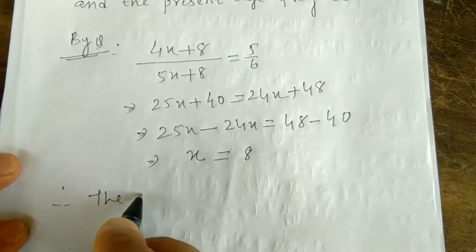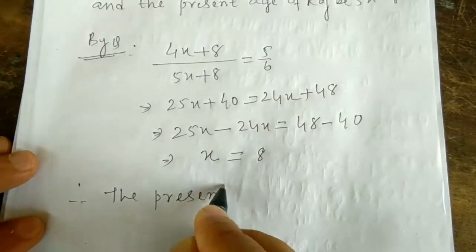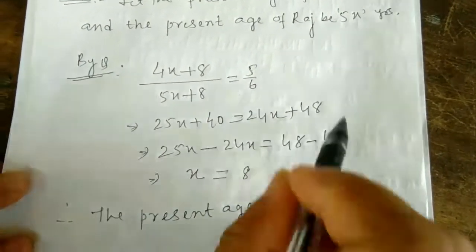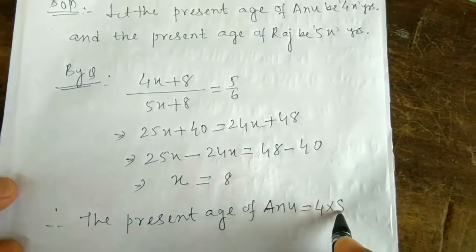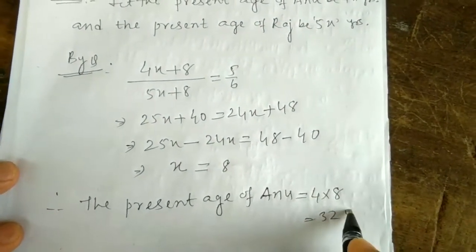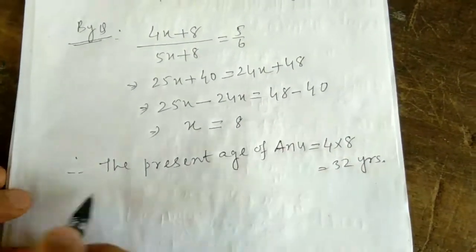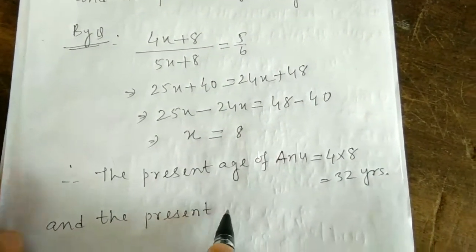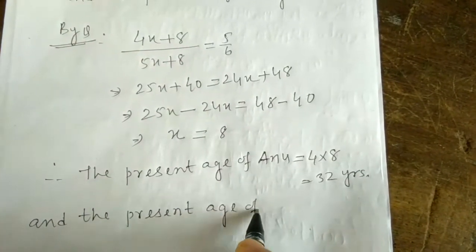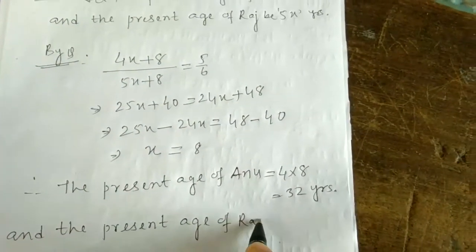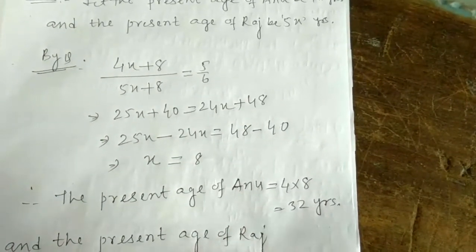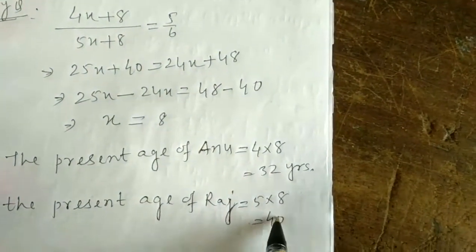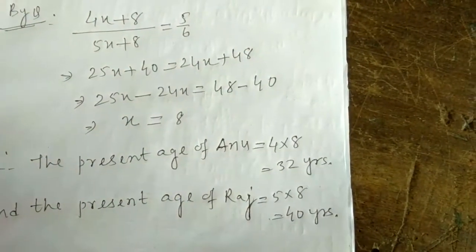Therefore the present age of Anu = 4x = 4 × 8 = 32 years. And the present age of Raj = 5x = 5 × 8 = 40 years.